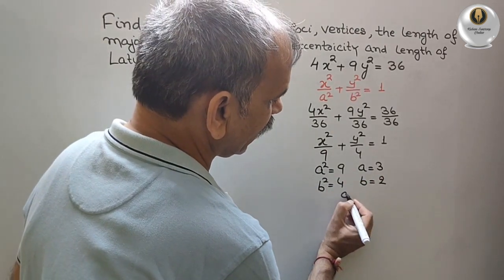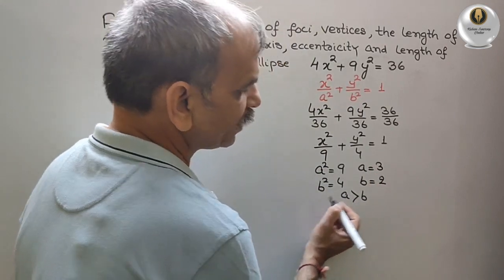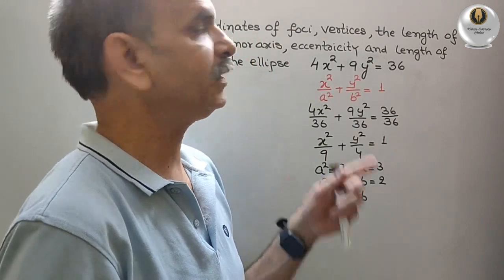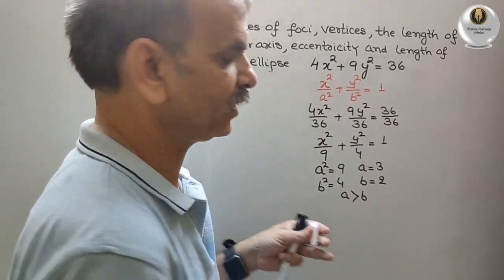So you can see here, a is greater than b. That means it lies on x-axis. This ellipse lies on x-axis.